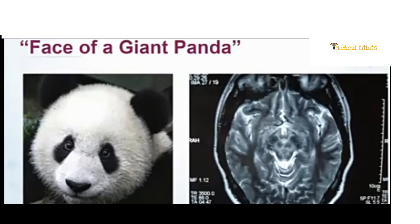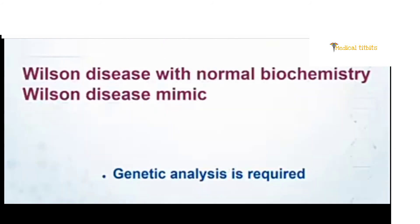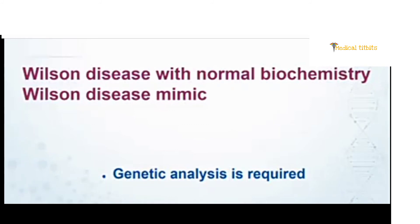Biochemically, however, we did not get elevated 24-hour urinary copper, ceruloplasmin deficiency, or Kayser-Fleischer rings. So is this a Wilson's disease mimic, or Wilson's disease with normal biochemistry? The only definitive way to diagnose Wilson's disease is through genetic analysis showing an ATP7B mutation. We did not perform that genetic analysis, so comments or questions are welcome. Let us move to the next case.